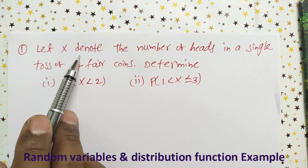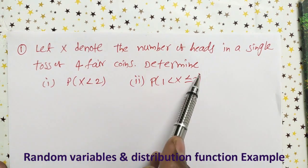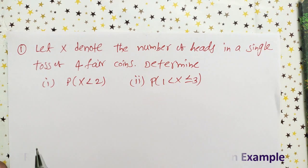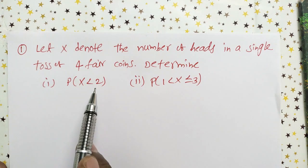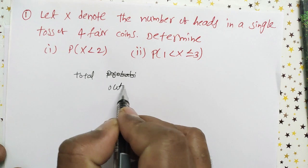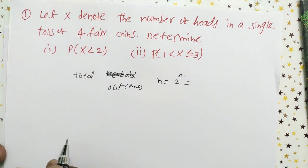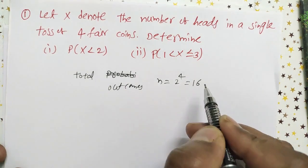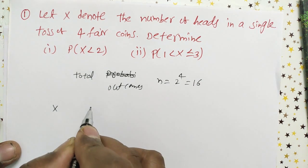Let X denote the number of heads in a single toss of four fair coins. We need to determine P(X<2) and P(1<X≤3). X is the number of heads that appear when four coins are tossed at a time. Total outcomes are n = 2 to the power 4, which equals 16.